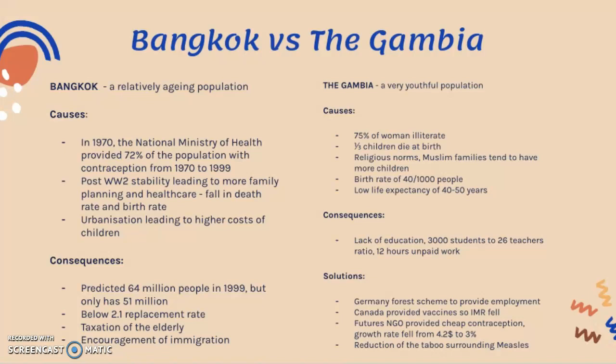Because the Gambia is a developing country, children are seen as economic assets, which leads families to try for more children to replace those who don't survive. There are also religious norms — Muslim families in the Gambia tend to have more children, though this isn't the case for everyone. The birth rate is 40 per 1000 people, which is relatively high.